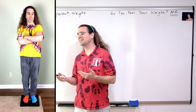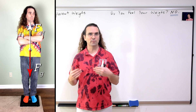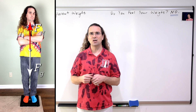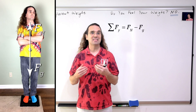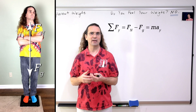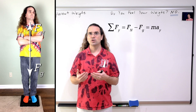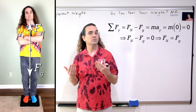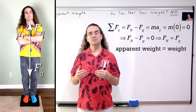Let's analyze Bo standing on a scale. The forces acting on him are weight, or the force of gravity, which is down, and the force normal, which is up. Newton's second law says the net force in the y direction equals force normal minus force of gravity, and also equals mass times acceleration in the y direction. In a typical situation where Bo is just standing at rest, his acceleration in the y direction is zero, so force normal equals weight — apparent weight and weight are the same.